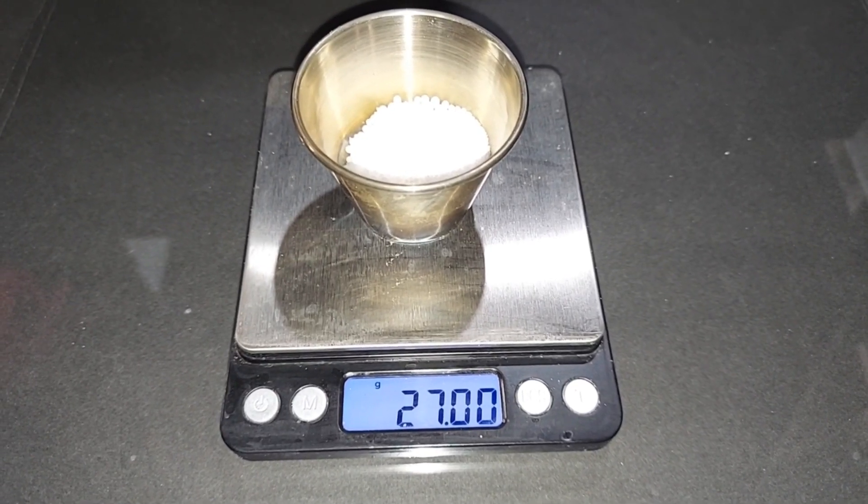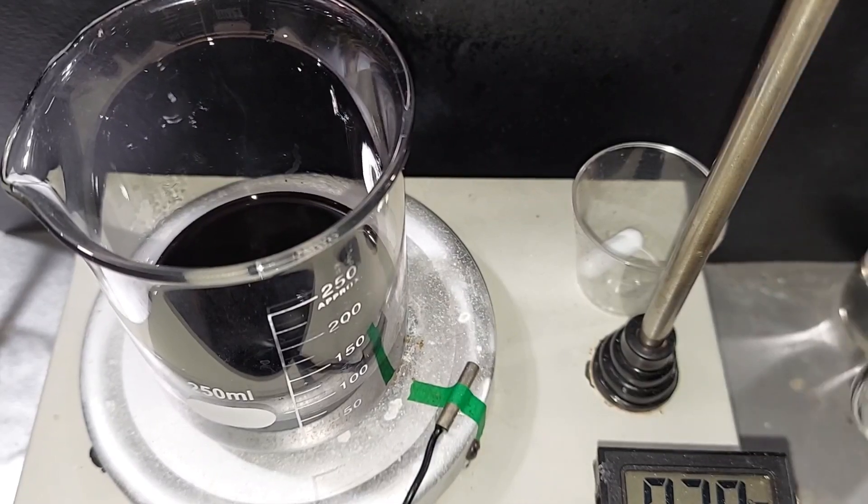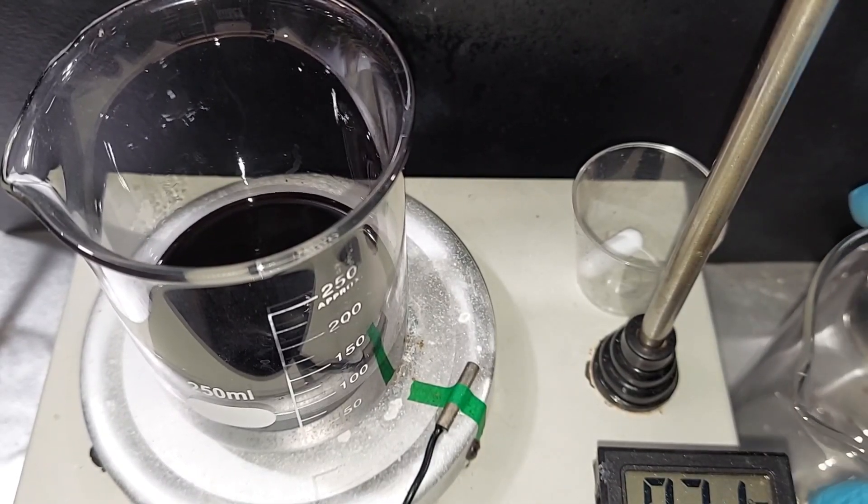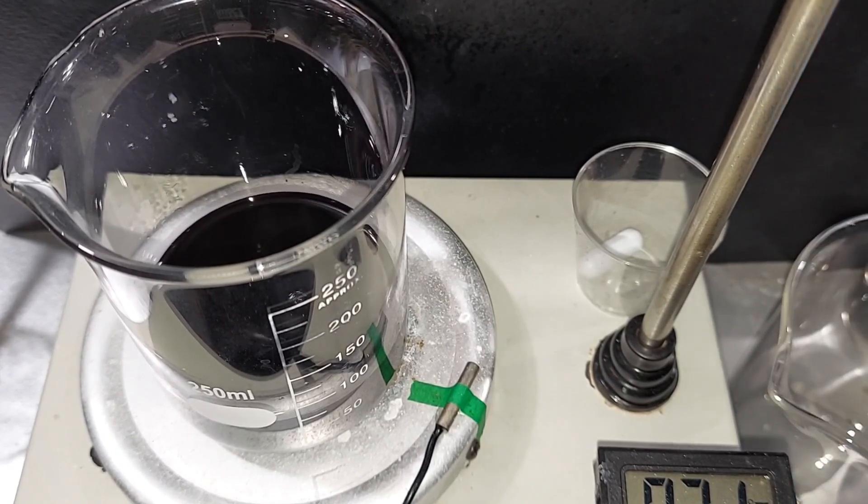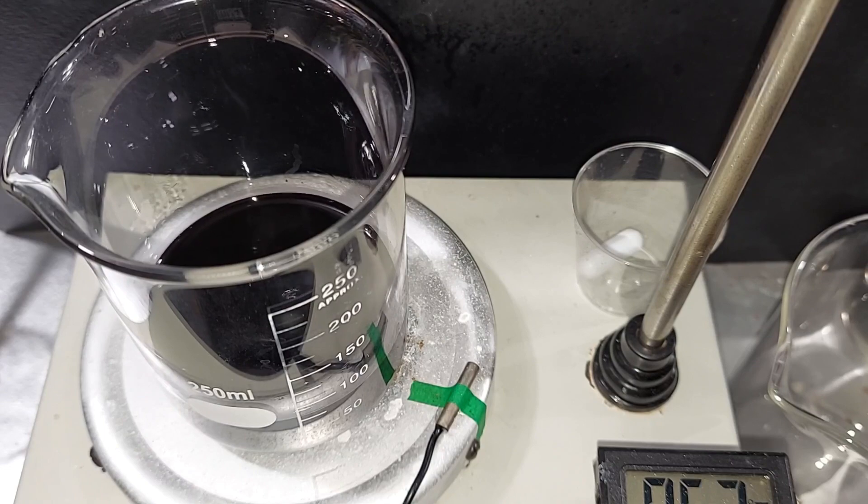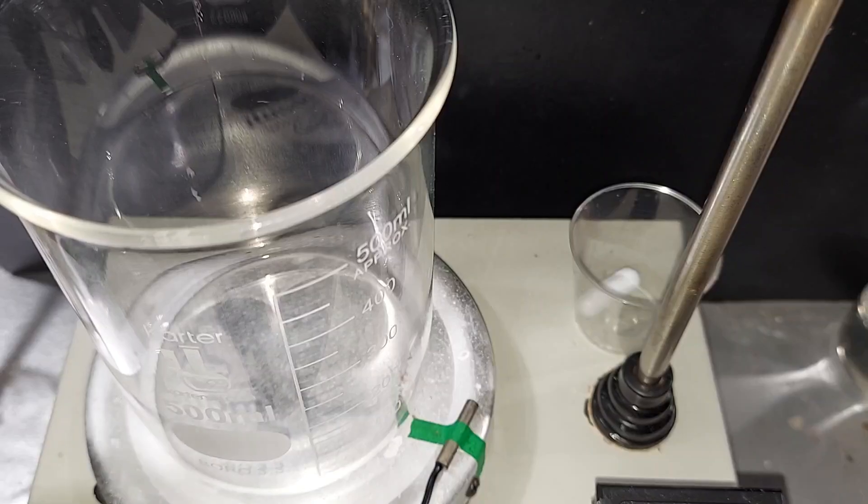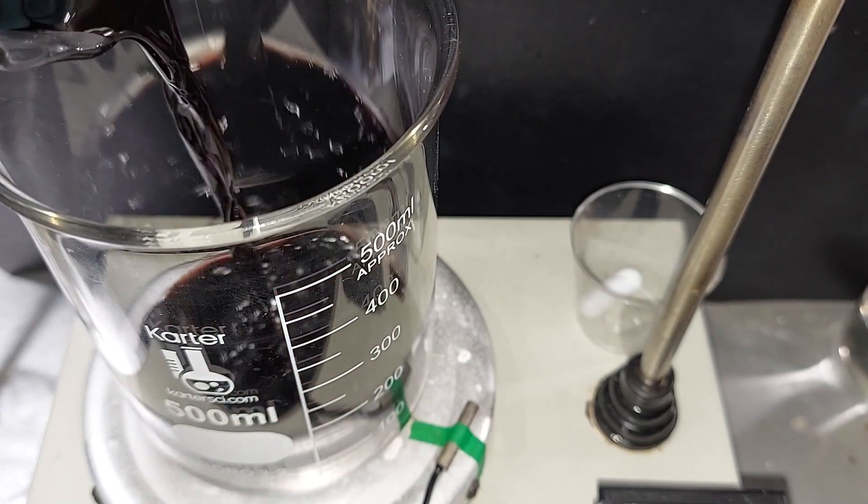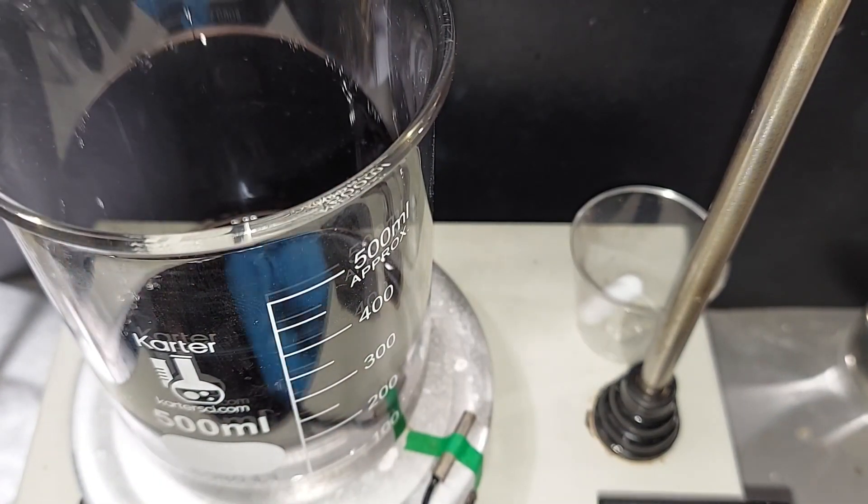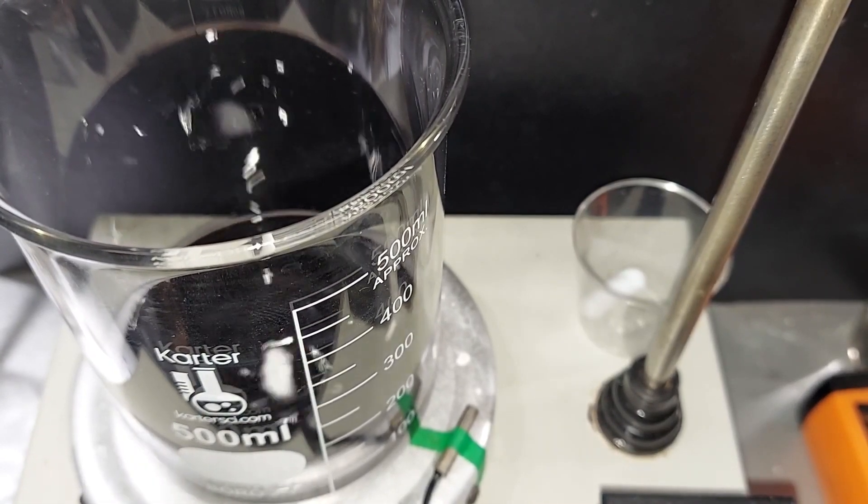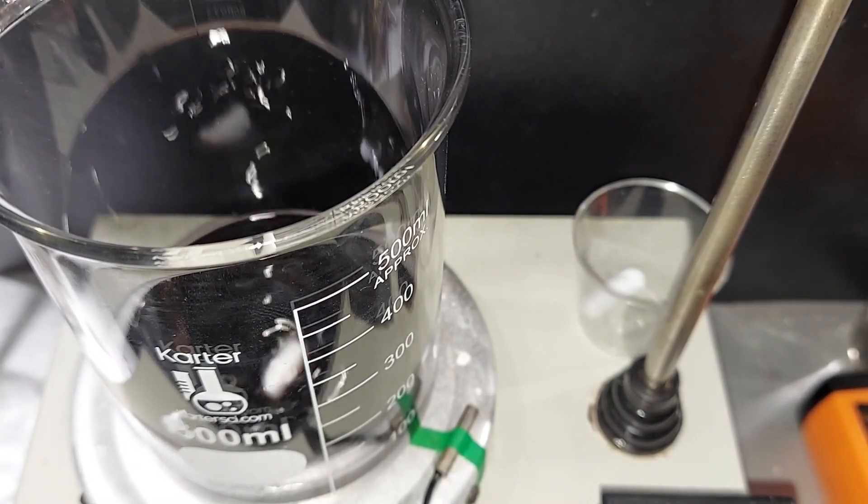27 grams of sodium nitrate pre-weighed. I'm also going to be transferring it to this 500 ml beaker here because as we add the sodium nitrate, the solution is going to produce carbon dioxide, and foaming is a real problem. So the larger beaker, I think, will help. Transferring the solution to the 500 milliliter beaker. The solution is now at 90 degrees Celsius, and I'm going to slowly add our sodium nitrate.